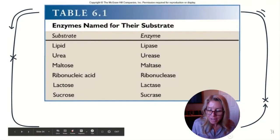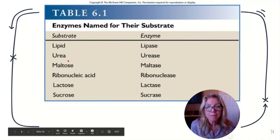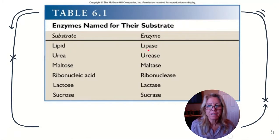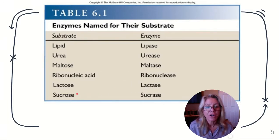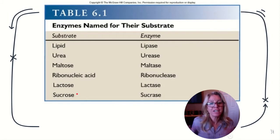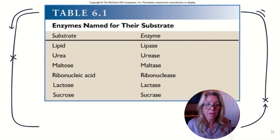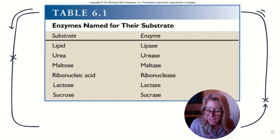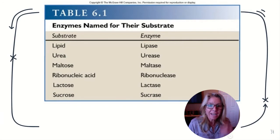Enzymes are usually named after the substrate they work on. For instance, lipids are digested by lipase, maltose by maltase, lactose by lactase, and sucrose by sucrase. Because enzymes are specific to their substrate, they're often named for their substrate — you just add the suffix -ase. So I'm Mrs. Sloan, meaning my enzyme name would be Sloanase. Whenever you see -ase, you know you're talking about an enzyme.